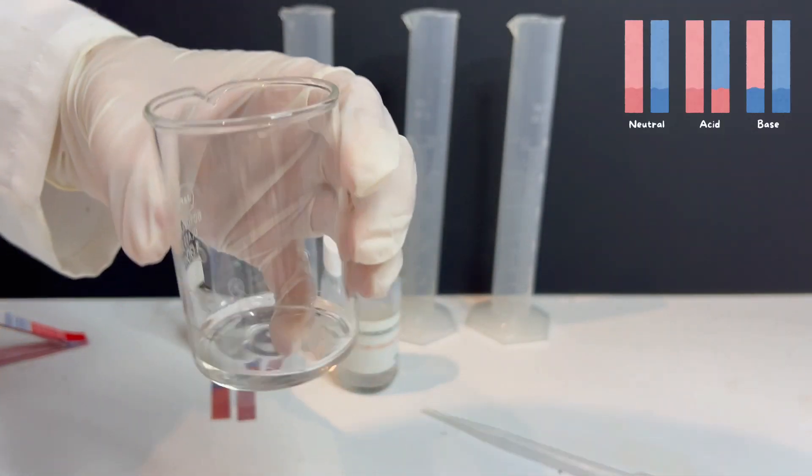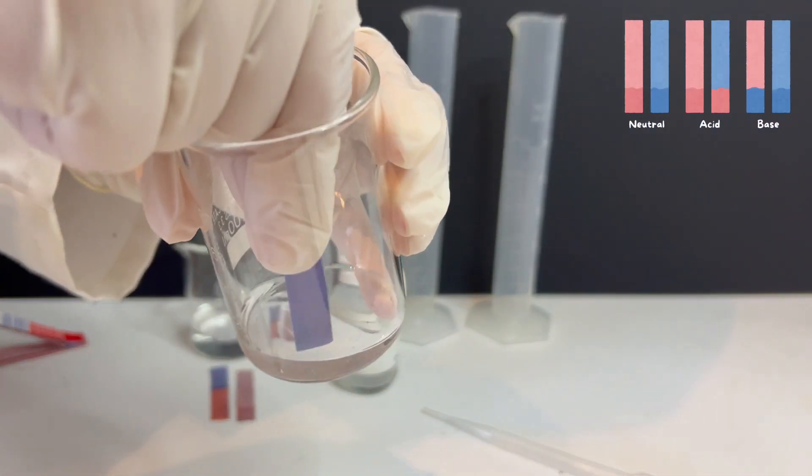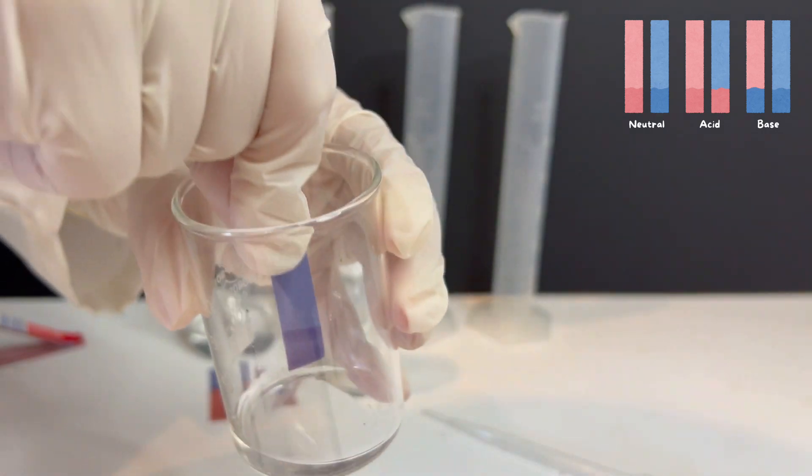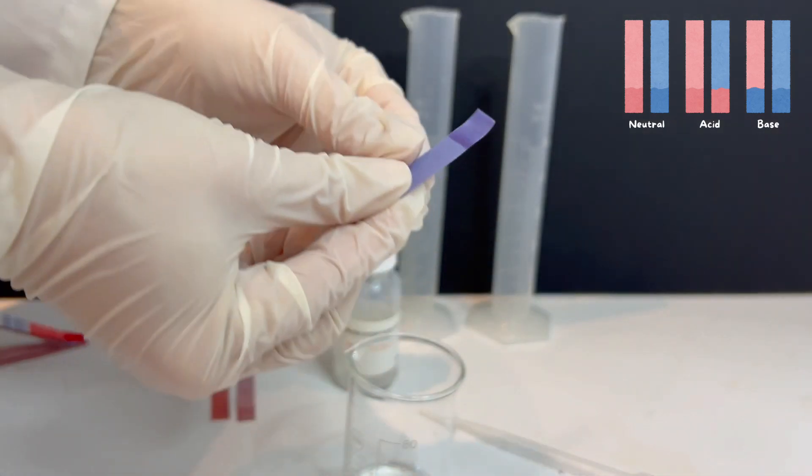I start by dipping the blue litmus paper into the sodium hydroxide solution. There is no real color change. It stays blue. This means the solution is not acidic.